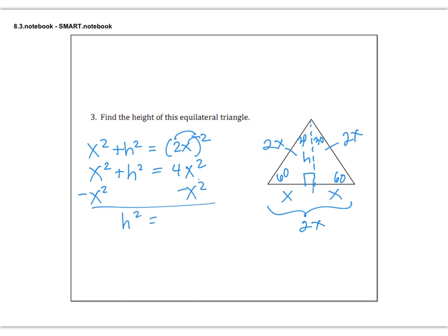There's not much we can do with x squared or h squared. But we can do something with 2x squared — 2 squared is 4, and x squared is x squared. Notice we have some like terms. If I subtract x squared from both sides, I'm left with h squared on the left. 4x squared minus 1x squared will be 3x squared. I'm trying to solve for the height, so I'll take the square root. The square root of 3 is not a nice number, so we'll leave that under there. But the square root of x squared is x. So the height of this triangle would be x root 3.